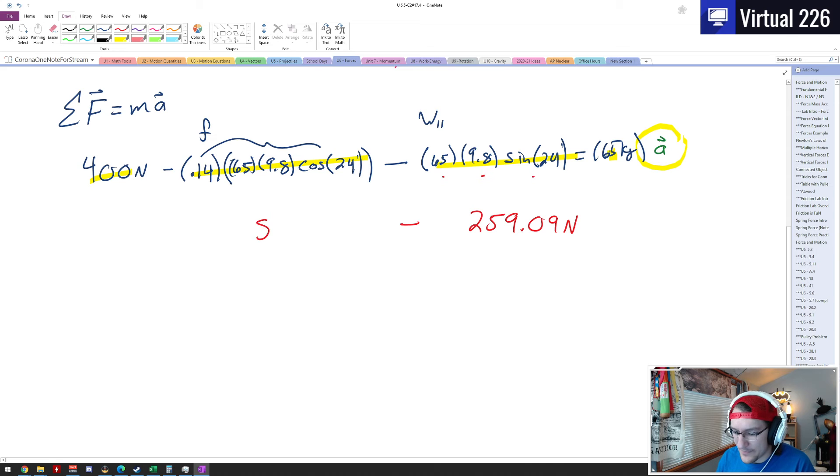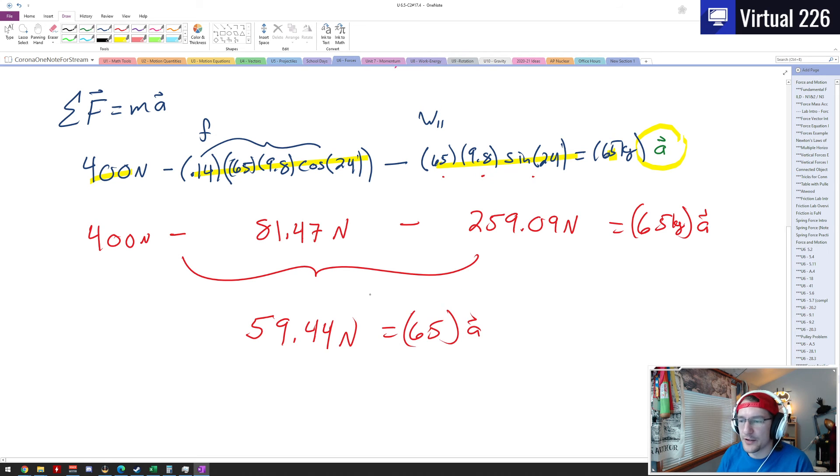I get 81.47 newtons. Bring that negative down, bring that subtraction, and that's just a 400 there newtons, and it will equal 65 kilograms multiplied by the acceleration. So I've just got a bunch of numbers here that I need to subtract together. 400 minus 81.47 is 318.53, minus 259.09 is 59.44 newtons.